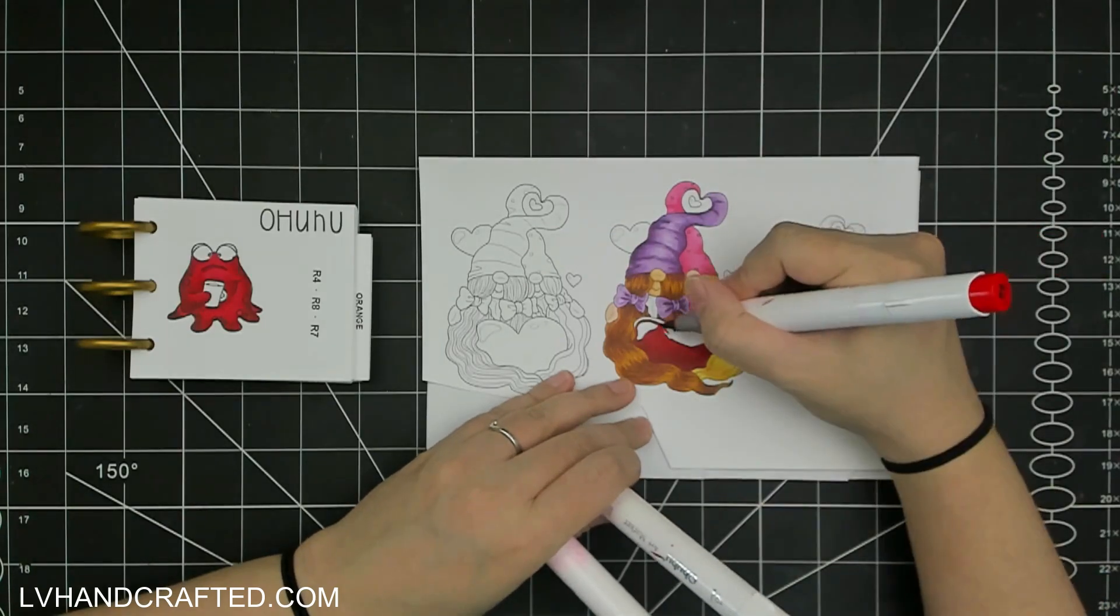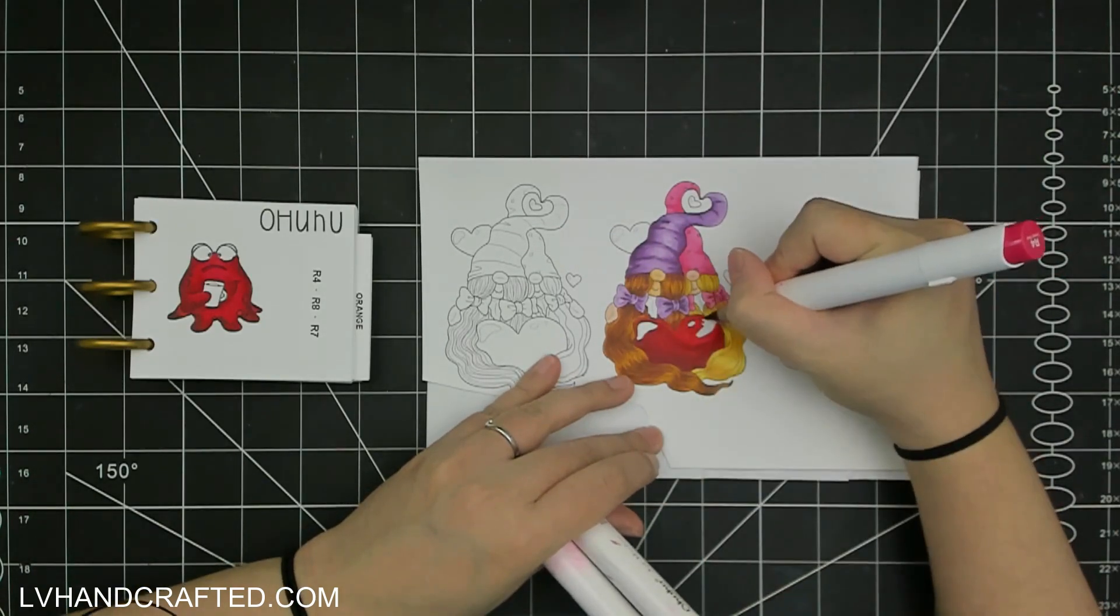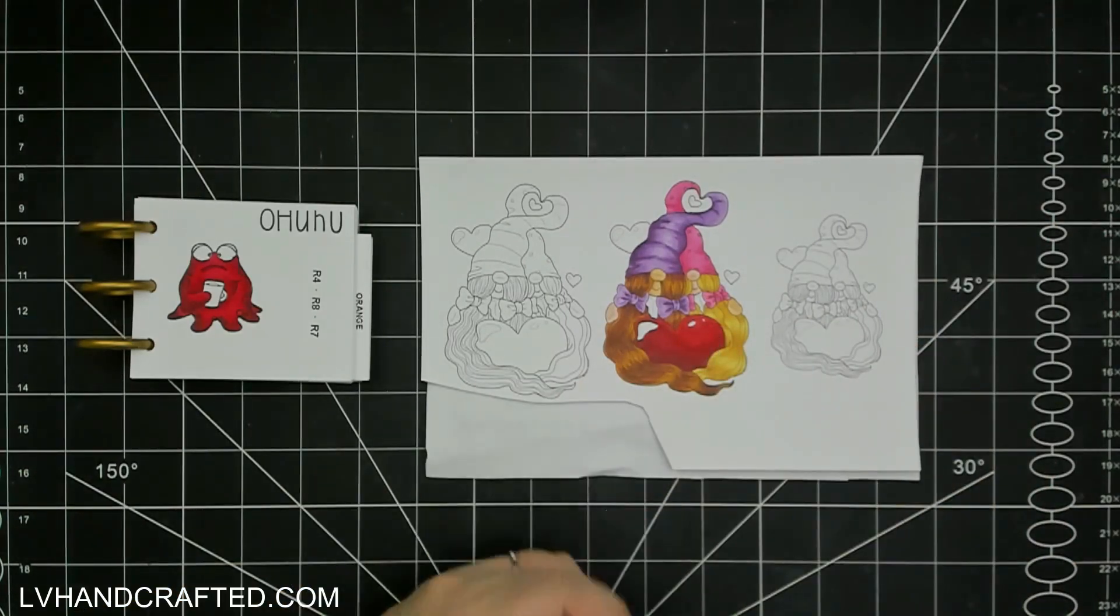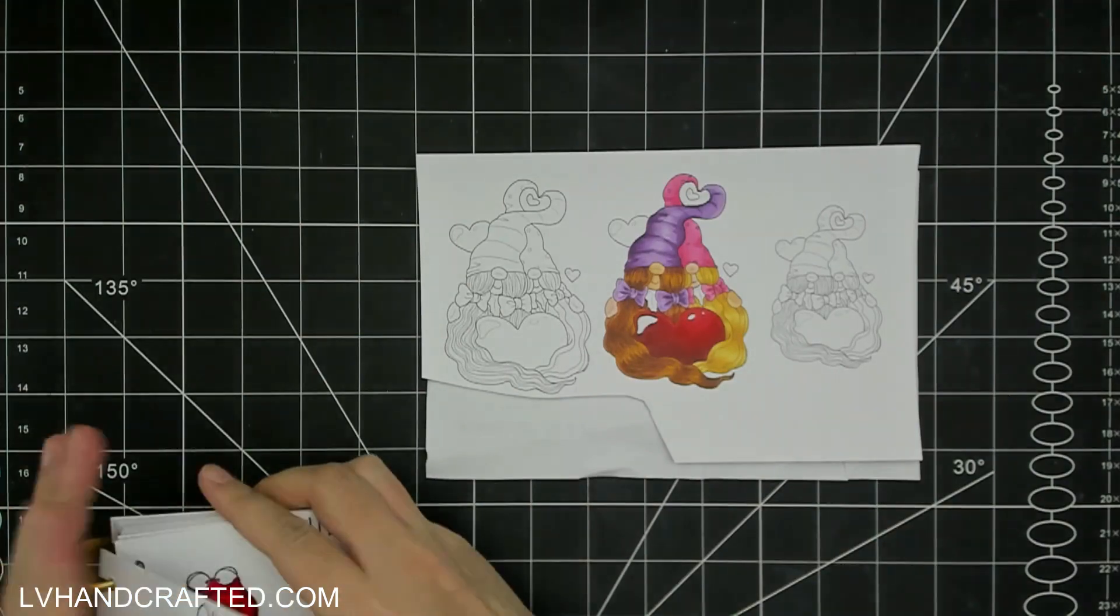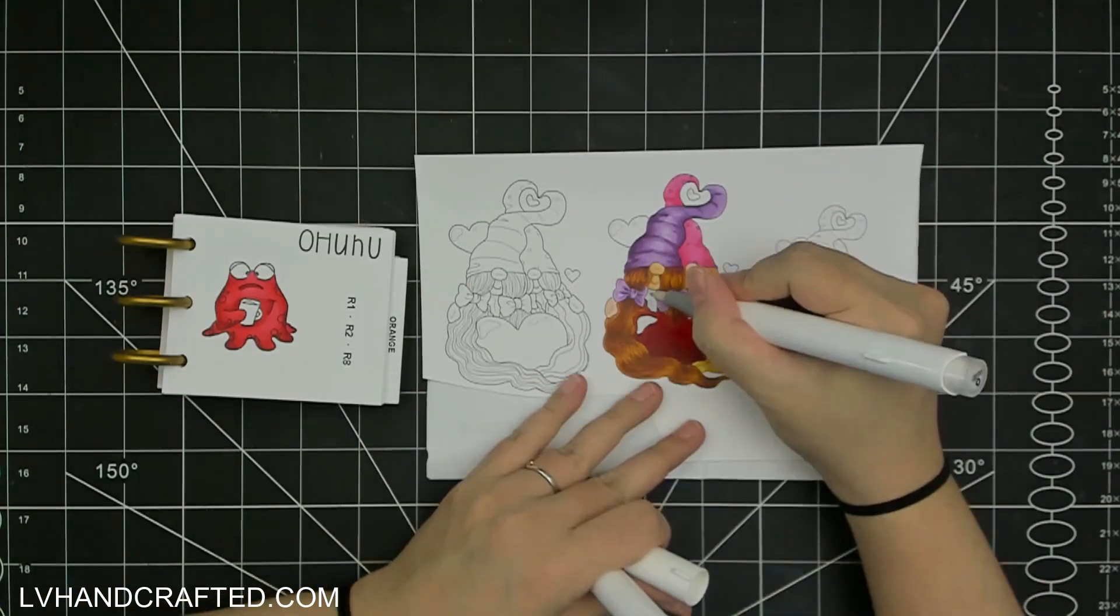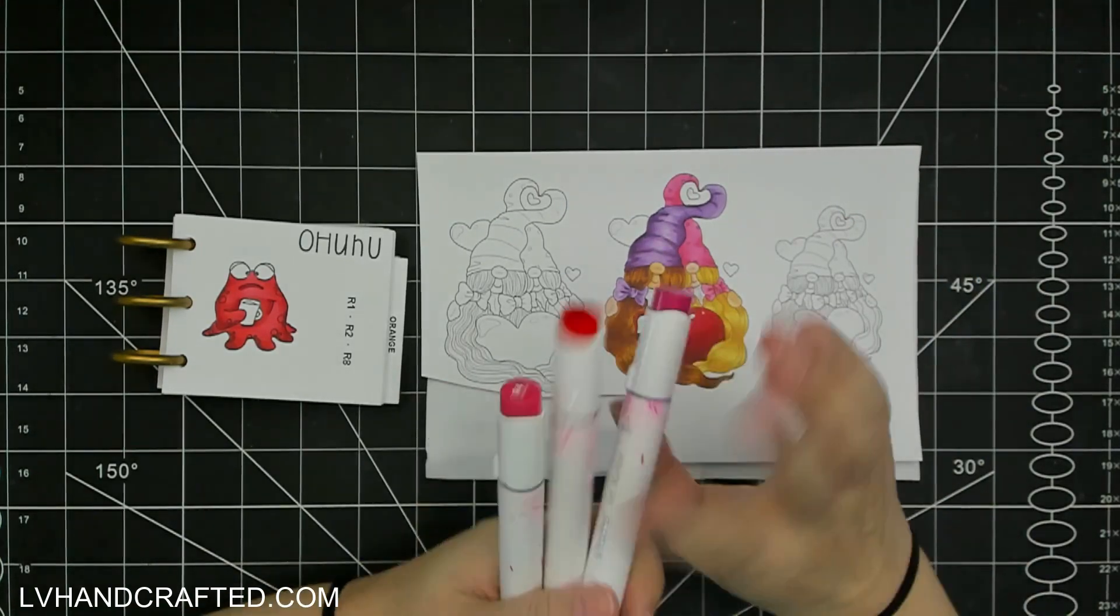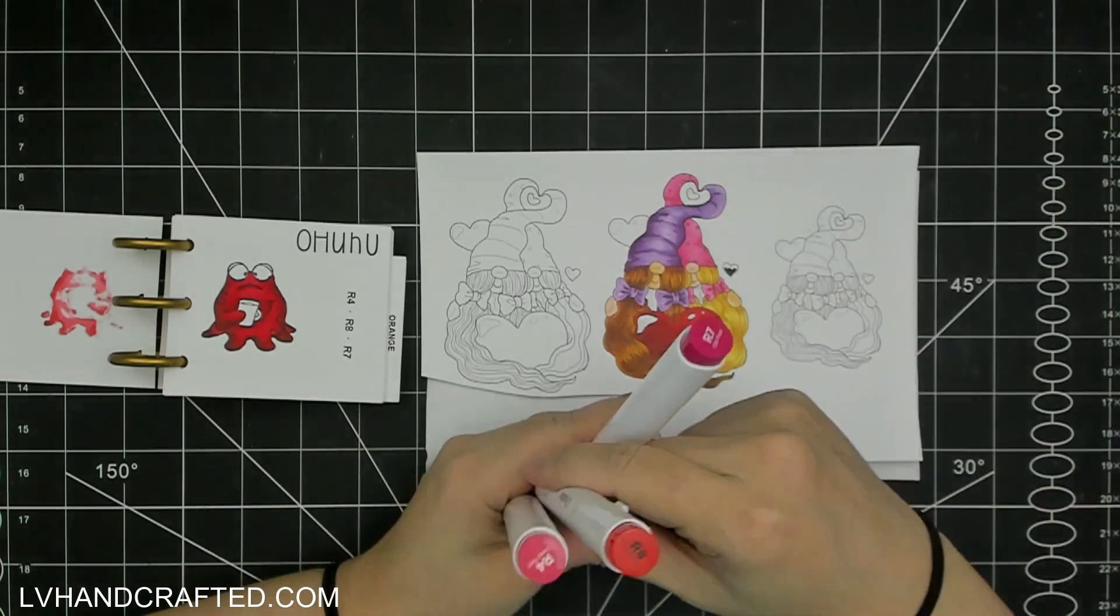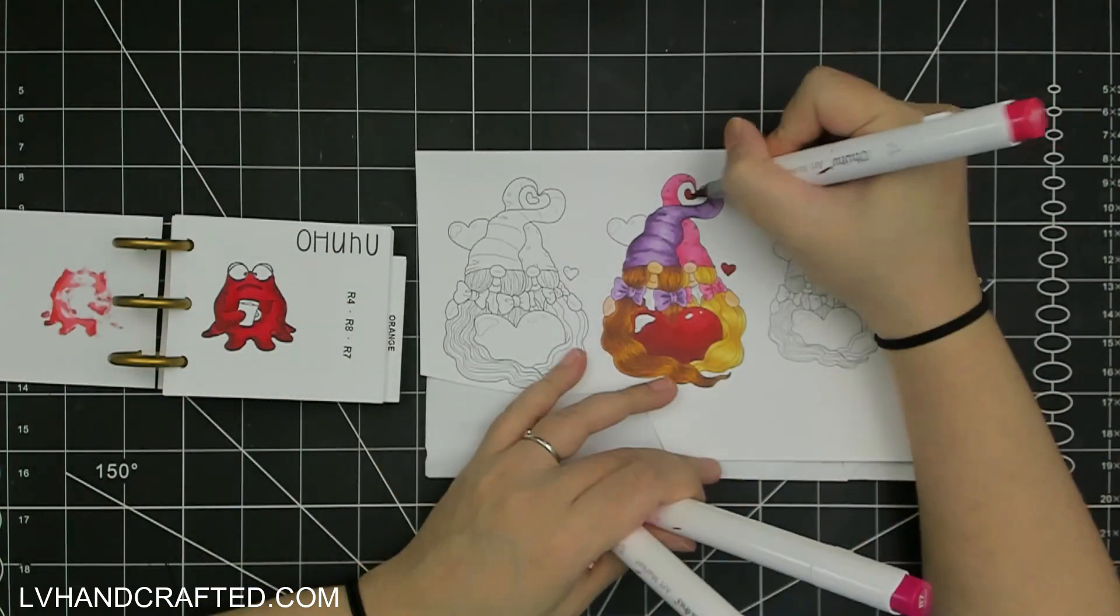You can lighten some areas because, as I mentioned, with lighter markers there is more of that alcohol blending solution in them, so that can bleach out colors. So it's possible, but there's some limitations as to how much you can really lighten up an area that's already been colored.